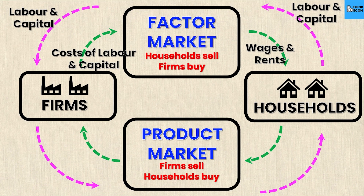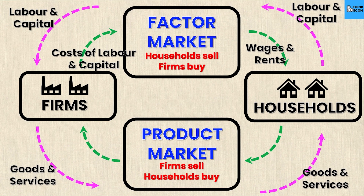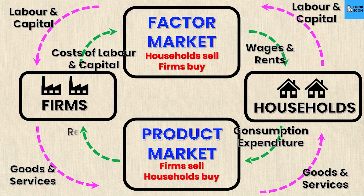In the product market, firms give goods and services — goods are sold by the firms and households receive those same goods and services. What do households give in exchange? Their expenditure, or consumption expenditure, meaning their spending on goods and services. And firms take in revenues for all of the goods and services that are sold.